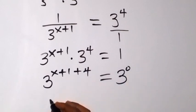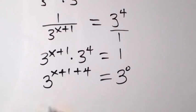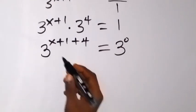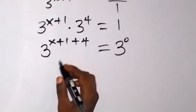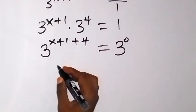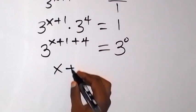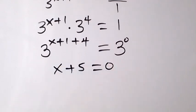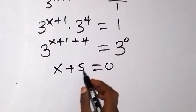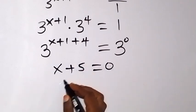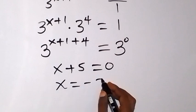And from here, we have 3 raised to power — since we have the same bases now, we can of course equal the powers. What we have is x plus 5. So we have x plus 5 equals 0. Since we are finding x, take 5 to the other side — that means x is now equal to minus 5.